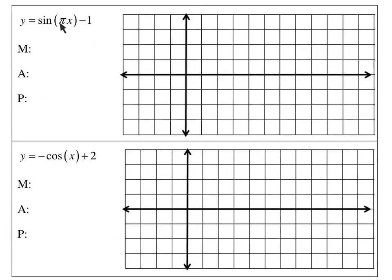We're going to graph this next function. First thing, we want midline, amplitude, and period. My midline is right there. My amplitude is the number in front, which is nothing — which actually is a 1. So my amplitude is 1. And my period is always 2 pi divided by that number. So 2 pi divided by pi — those cancel — leaves you 2. So the period is 2. Now when I graph, the first thing you want to do when there's a midline is to graph the midline. My midline is right there at negative 1.